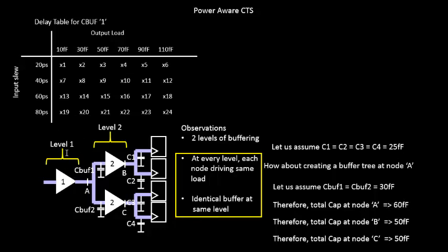Let's say 70 femto farads. Take a general example. So the input transition of this particular buffer is 60 picoseconds and output is 70 femto farads. So this is how we'll be looking into the table.